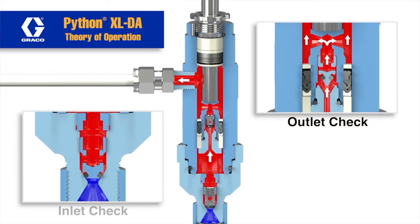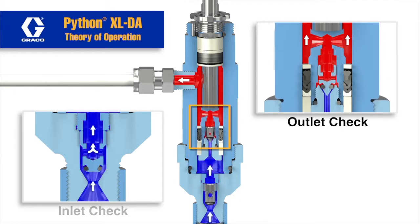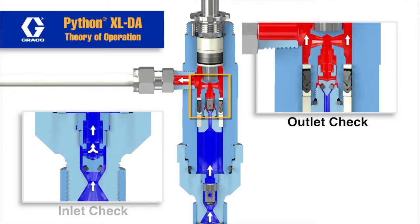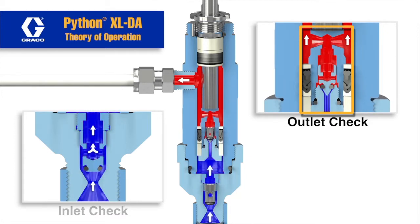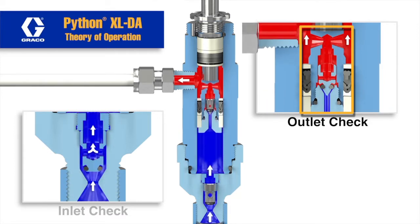You'll notice from the animation that the outlet check valve housing is connected to the plunger rod and moves with it. The outlet check valve housing is hollow down the center allowing for fluid to pass through during the downstroke.